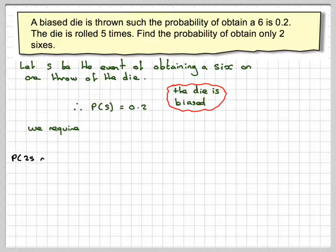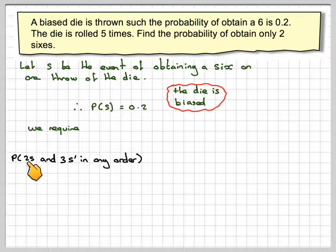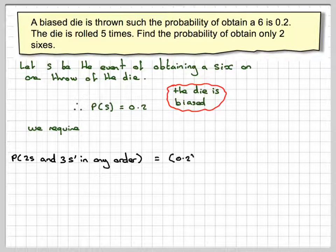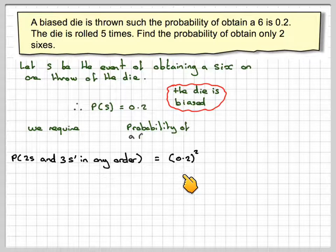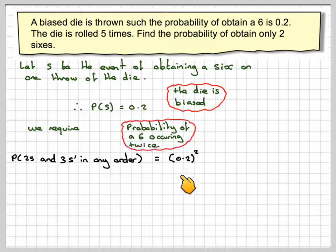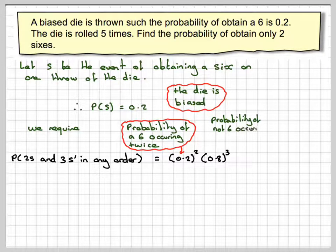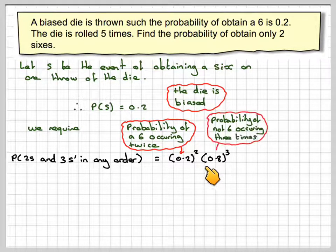So we require the probability of two sixes and three not-sixes in any order. Well, the probability of getting two sixes is 0.2 squared. The probability of getting a not-six occurring three times.